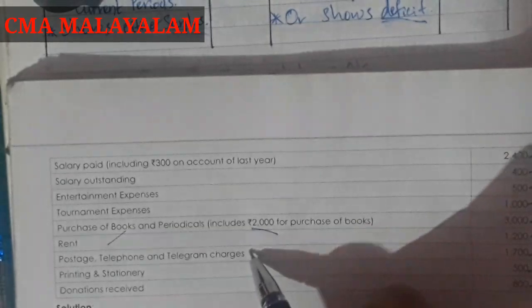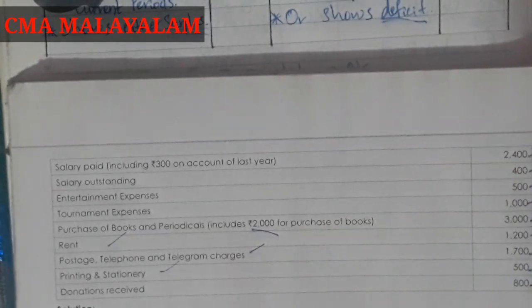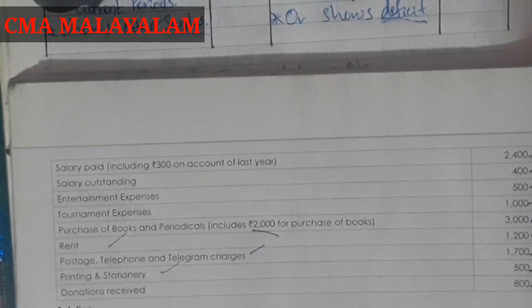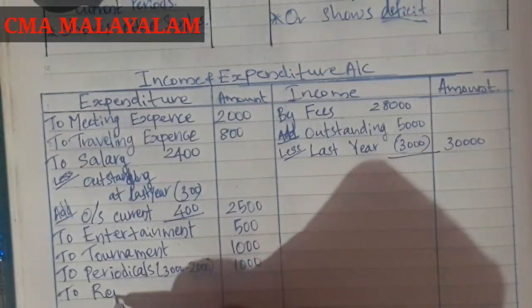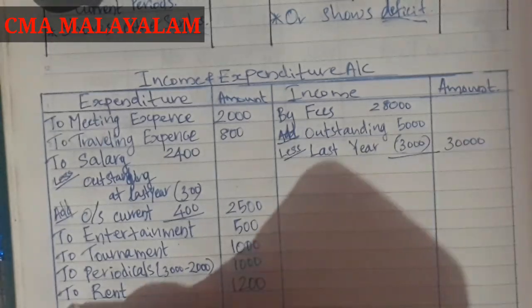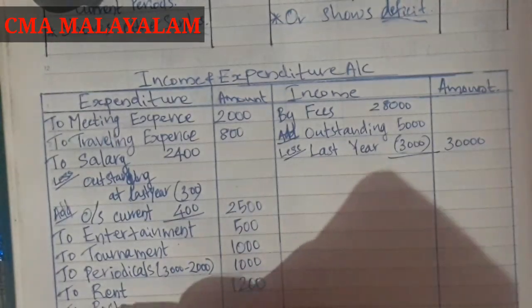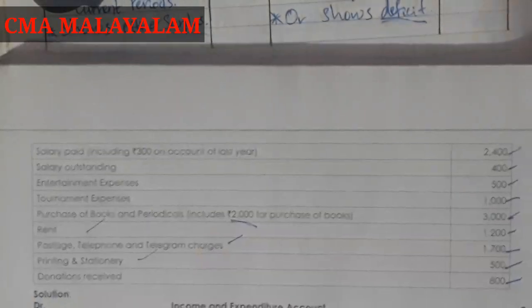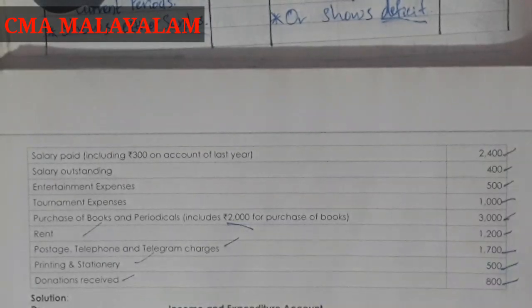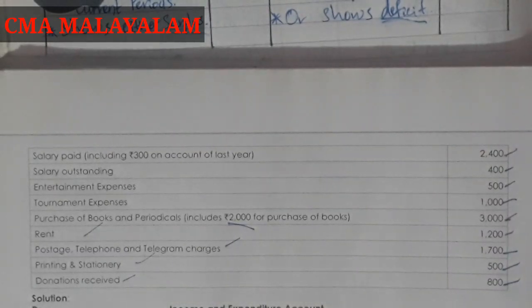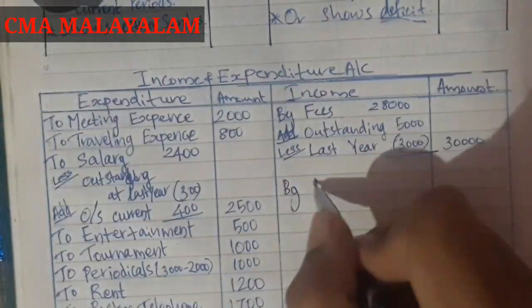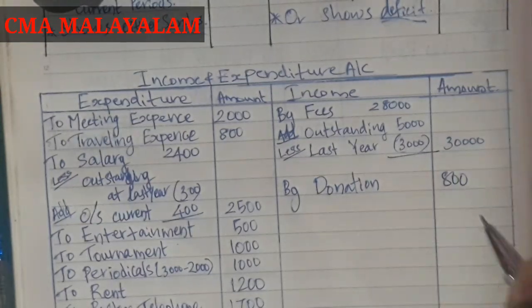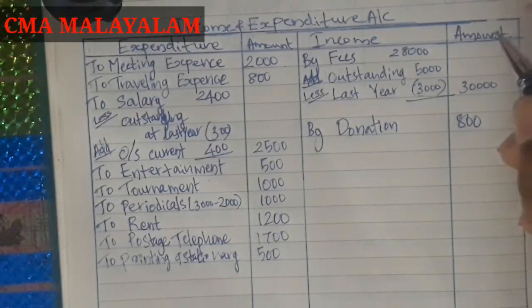There are two more items: postage, telephone, and printing — these go on the Income and Expenditure side. Donation received of 5,000 — so the donation received goes on the income side. We will add it to the income side.